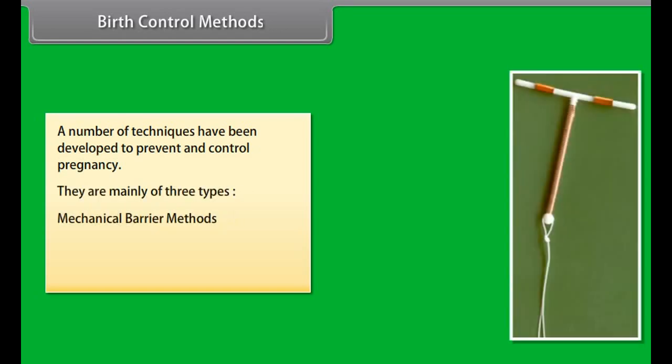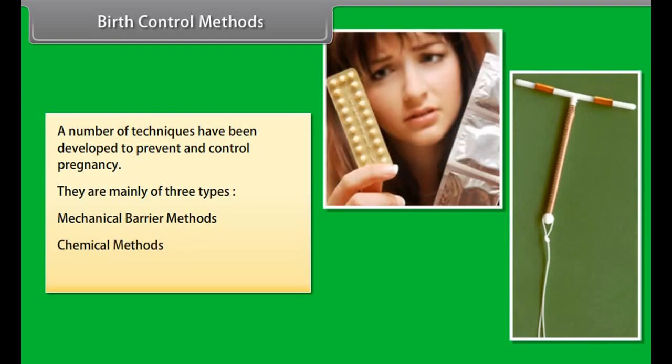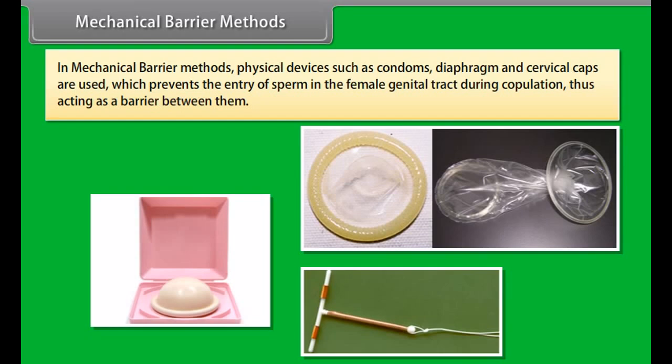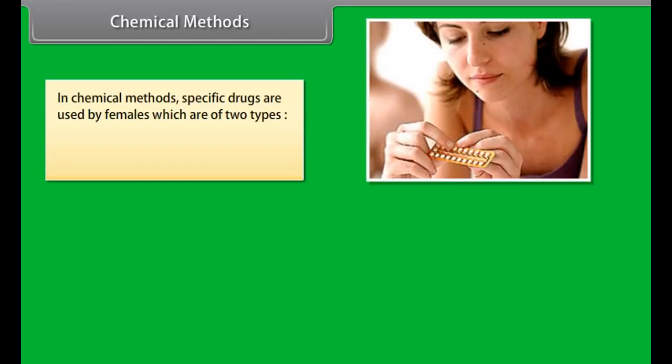A number of techniques have been developed to prevent and control pregnancy. They are mainly of three types: mechanical barrier methods, chemical methods, and surgical methods. In mechanical barrier methods, physical devices such as condoms, diaphragm, and cervical caps are used, which prevent the entry of sperm into the female genital tract during copulation. The use of intrauterine contraceptive devices (IUCDs) prevents implantation in the uterus; this device is a copper T placed safely inside the uterus by a doctor.